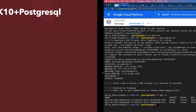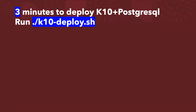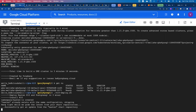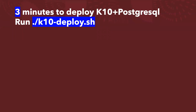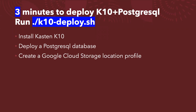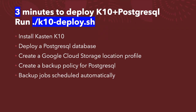Now let me come back to the slide deck. With a GKE cluster up and running, you only need three minutes to protect the containers — deploying Kasten K10 plus PostgreSQL. Let me kick off the job: K10-deploy.sh. While the job is deploying, let me review what we are doing. We will first install Kasten K10, then deploy a PostgreSQL database as a sample database, create a Google Cloud Storage location profile, create a backup policy for the PostgreSQL database. The backup jobs will then be automatically scheduled to run based on your settings — I've set it to run every one hour.